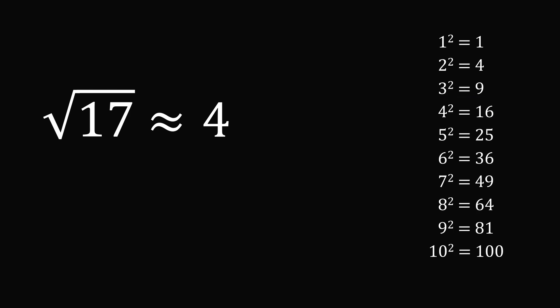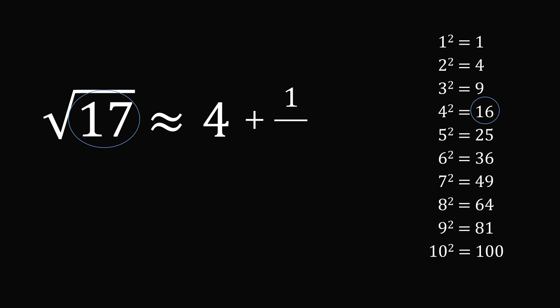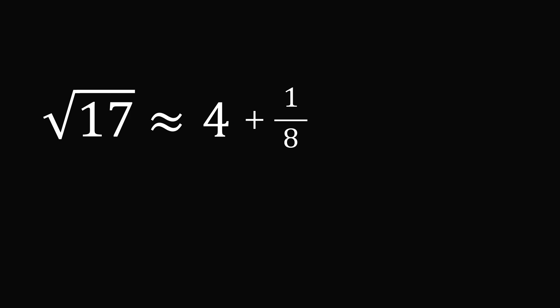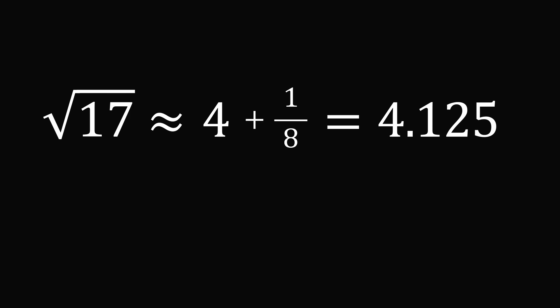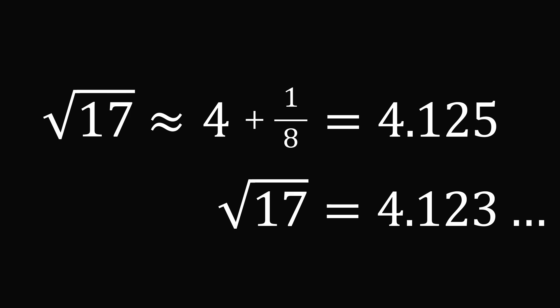We know 4 squared equals 16, and we want the square root of 17, which is larger, so we need to add a little bit. We add a fraction as an adjustment. The numerator is the difference between 17 and 16: 17 minus 16 equals 1. For the denominator, we take 4 and multiply it by 2 to get 8. So the square root of 17 is approximately equal to 4 plus 1 over 8, which works out to 4.125. The actual value begins 4.123, so this estimate is accurate to two decimal places.